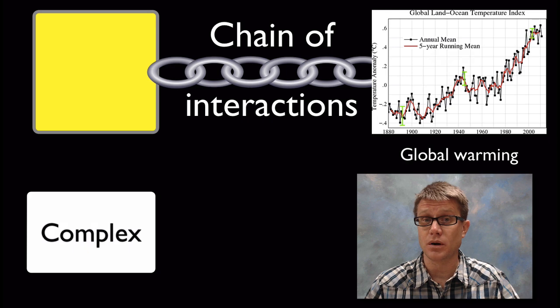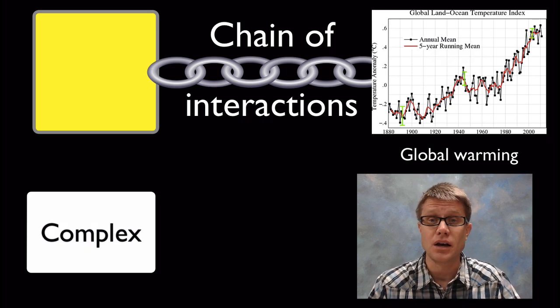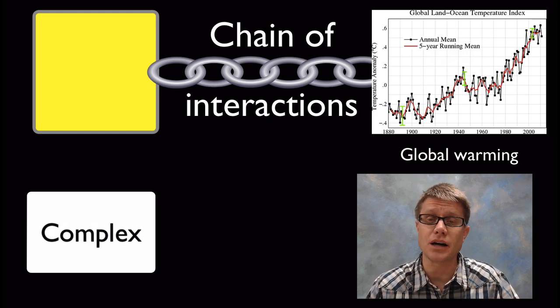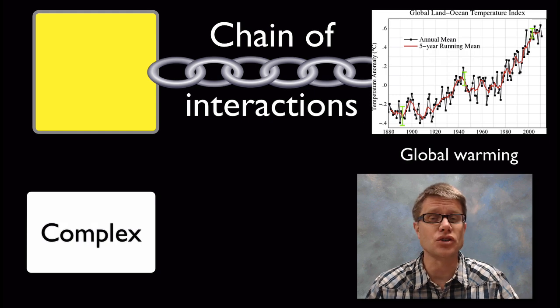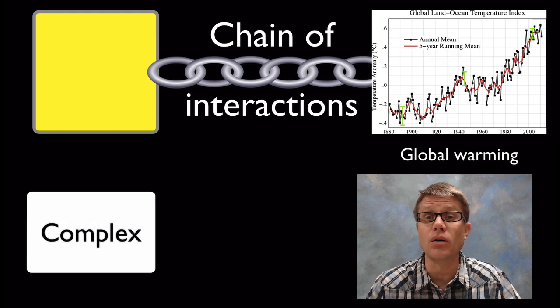Global warming is a great example of that. We know that the climate is getting warmer. We can see that in the geologic record. But we don't know specifically all the causes of that. We know that carbon dioxide is one of the big ones, greenhouse gas is one of the big ones. But there's so many variables at play it's hard to tell what are all of the causes.